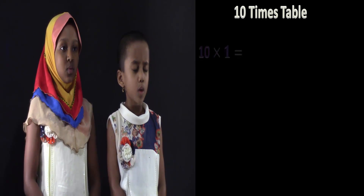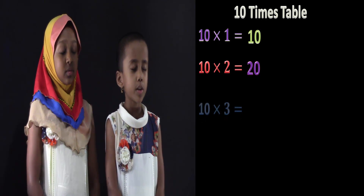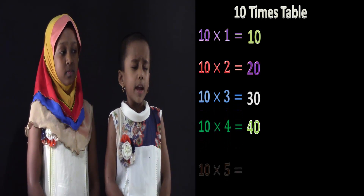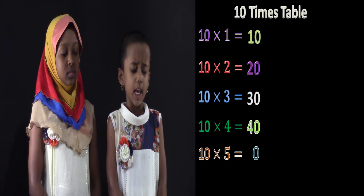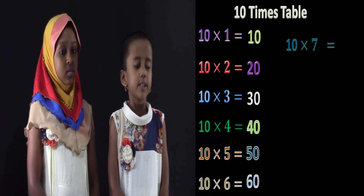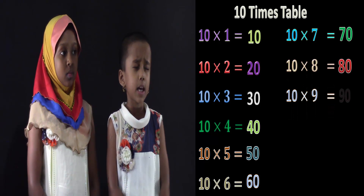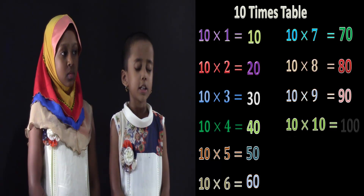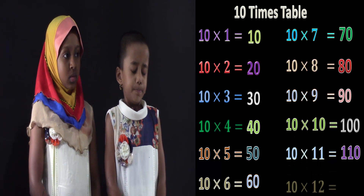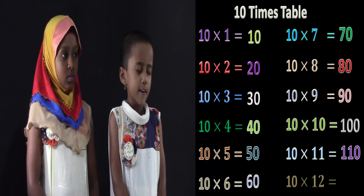10 times 1 is 10. 10 times 2 is 20. 10 times 3 is 30. 10 times 4 is 40. 10 times 5 is 50. 10 times 6 is 60. 10 times 7 is 70. 10 times 8 is 80. 10 times 9 is 90. 10 times 10 is 100. 10 times 11 is 110. 10 times 12 is 120.